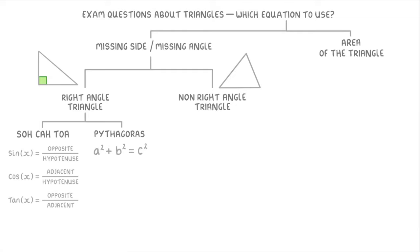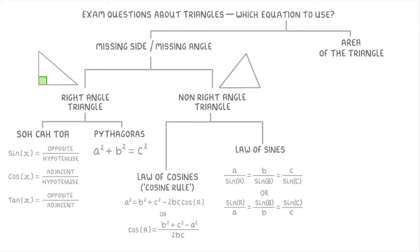On the other hand, if it isn't a right angle triangle, like say a scalene triangle, then you're probably using either the law of cosines, which we also call the cosine rule, or the law of sines, which we also call the sine rule.